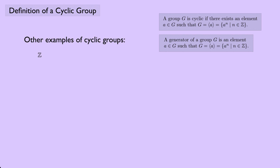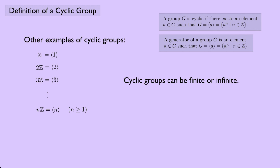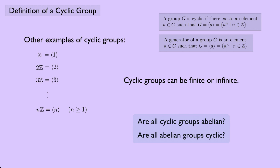Other examples of cyclic groups: Z, the set of integers with addition, is generated by the element 1. 2Z — the even integers like negative 4, negative 2, 0, 2, 4 — is generated by 2. 3Z is generated by 3, and in general nZ is generated by n for n greater than or equal to 1. Cyclic groups can be finite or infinite — Z6 and Z7 are finite cyclic groups, while Z, 2Z, and 3Z are infinite. Are all cyclic groups abelian, or are all abelian groups cyclic? That's something we'll look at in another video.